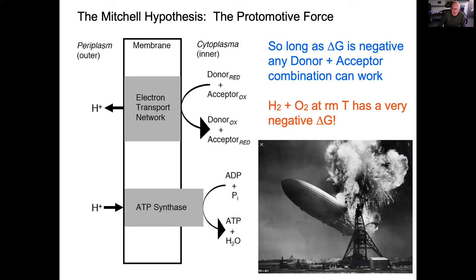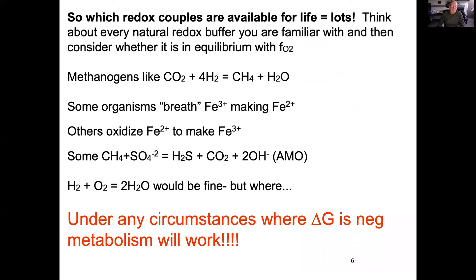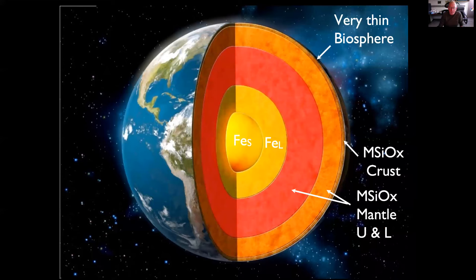Hydrogen and oxygen at room temperature has a very negative delta G. There are many different redox couples available for life. Methanogens, for example, feed on CO₂ and hydrogen to make methane and water. Some organisms breathe ferric iron making ferrous iron; others oxidize ferrous iron making ferric iron; some couple methane oxidation with sulfate to produce hydrogen sulfide — anaerobic methane oxidation. Basically, under any circumstances where delta G is negative, metabolism will work.